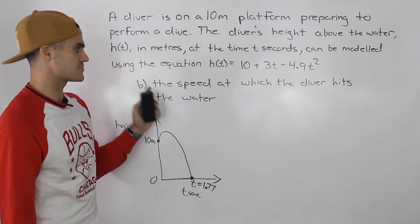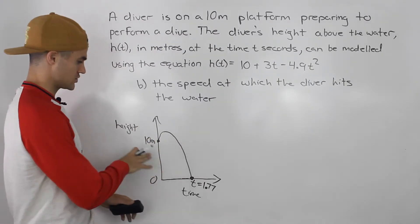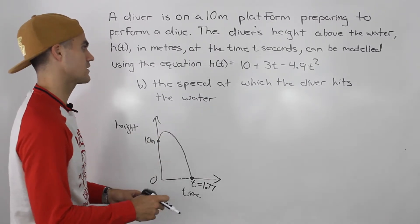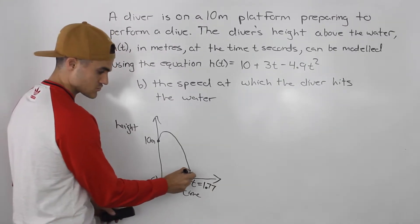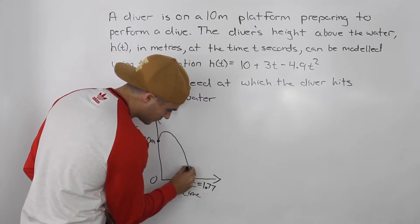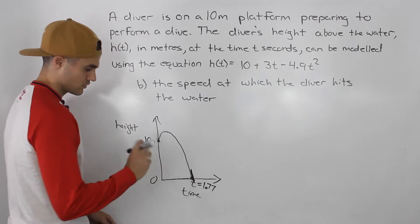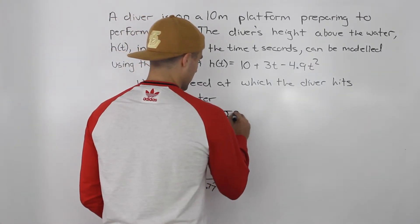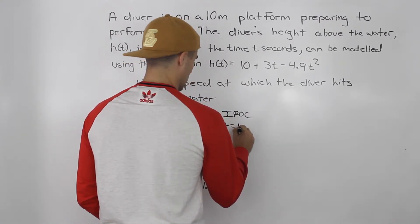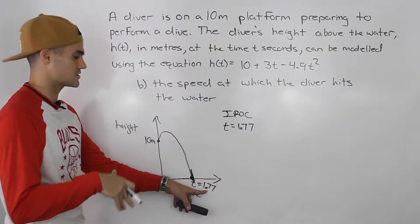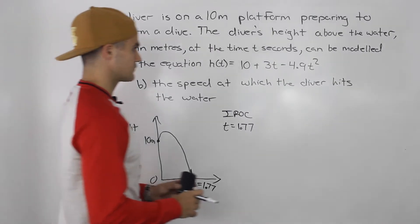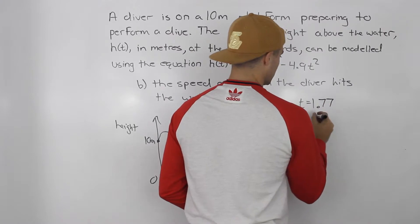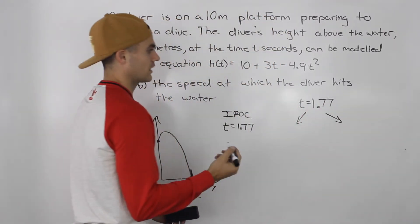For part b, they're asking for the speed at which the diver hits the water — the instantaneous rate of change when he hits the water, which is also the slope of the tangent at that point on the function. We need to find the instantaneous rate of change at t = 1.77 seconds, which is when he hits the water as found in part a. We'll use the centered interval method to get a good approximation.